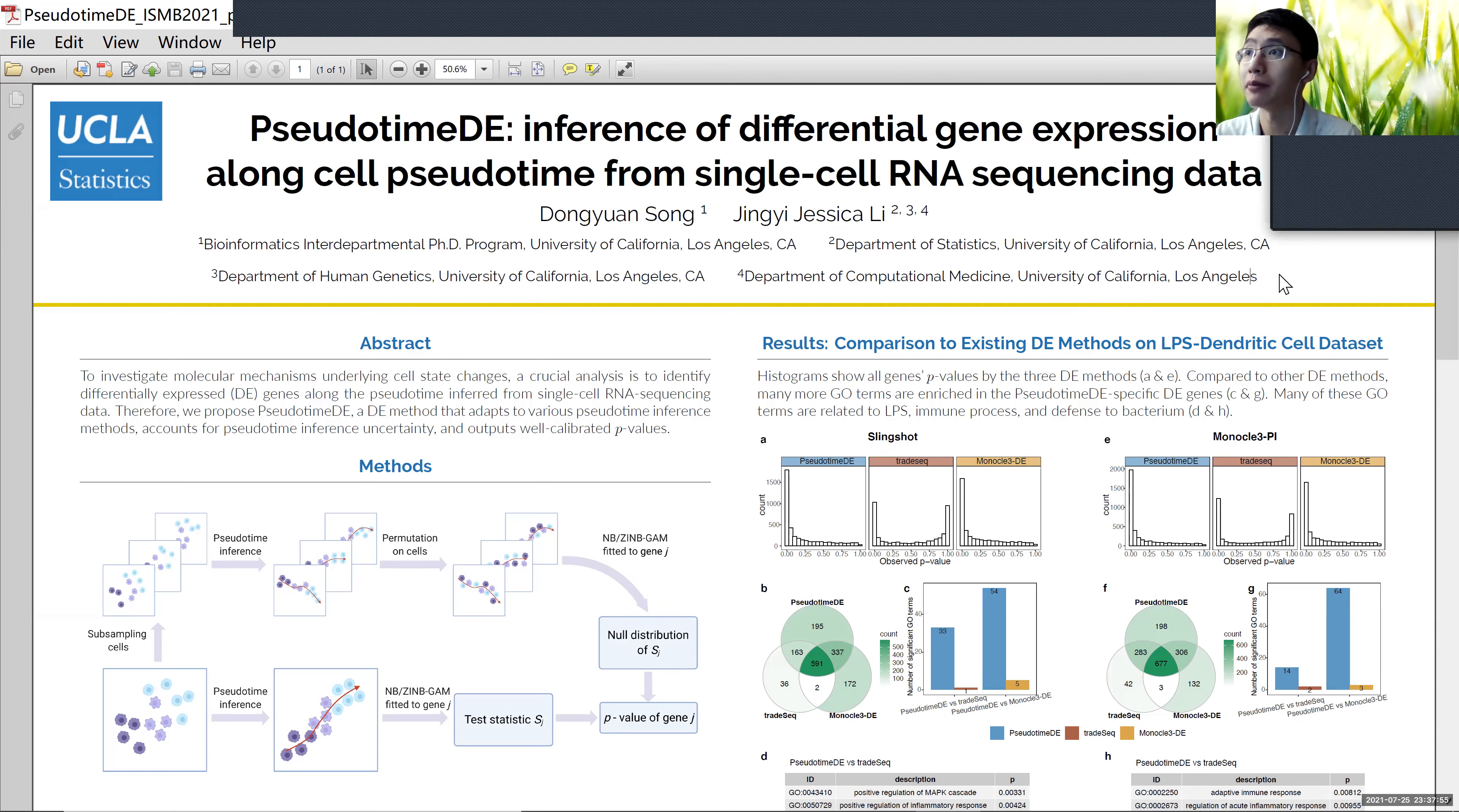Today, I'm going to introduce PseudotimeDE, which is our newest statistical method for the inference of differential gene expression along cells' pseudotime from single-cell RNA sequencing data.